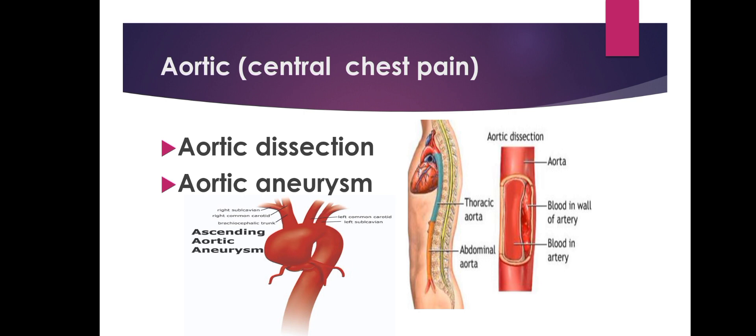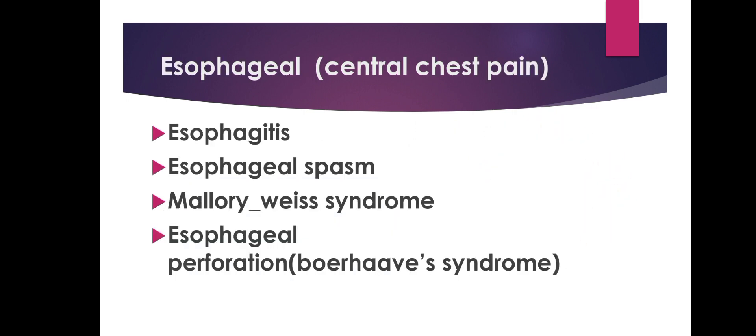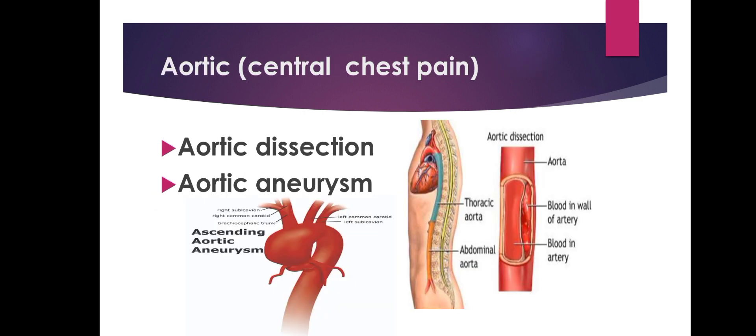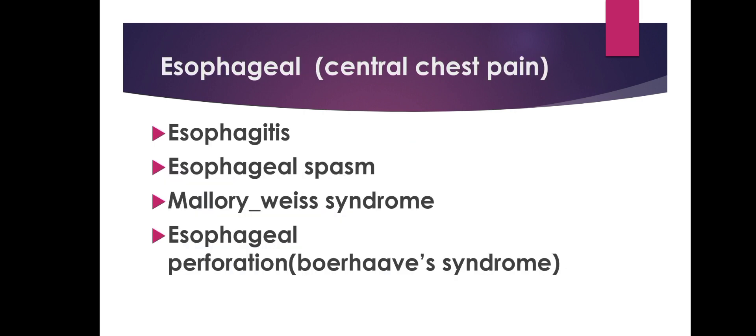Aortic causes for central chest pain include aortic dissection and aortic aneurysm. In aortic dissection, there is blood in the wall of the artery, as can be seen on imaging. An aneurysm is an abnormal dilatation of the aortic wall.